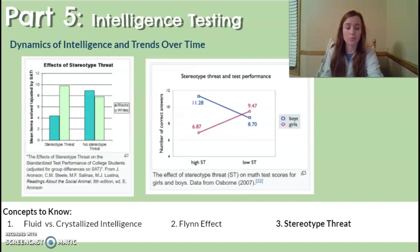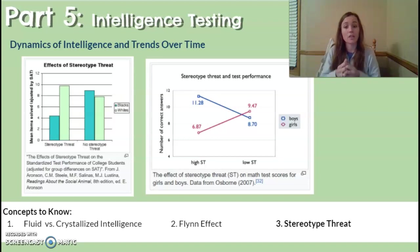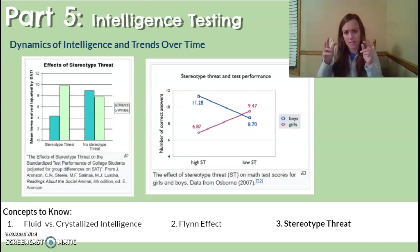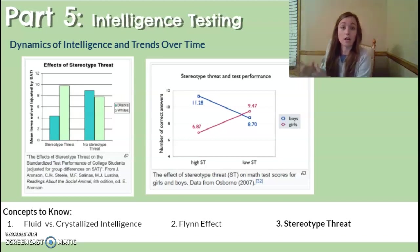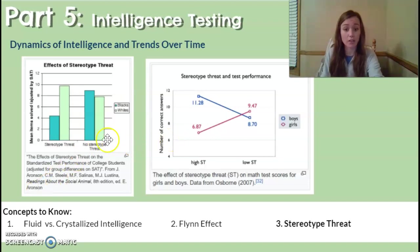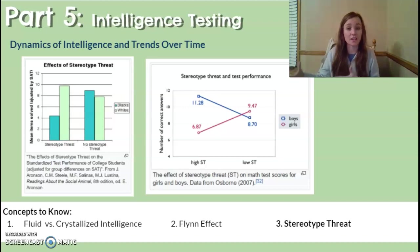The last concept is stereotype threat — a self-fulfilling issue where when a person believes they are being evaluated on something that represents a negative stereotype for their gender or race, their score tends to reflect that negative stereotype. If they are unaware they're being tested on that stereotypical content, it doesn't impact their score. Over 300 studies have been published demonstrating the strength of stereotype threat, and it is considered one of the biggest contributing factors to racial and gender achievement gaps. I hope this was helpful in understanding intelligence, how it's tested, and what we've learned about it over time — good luck on the cognition test.